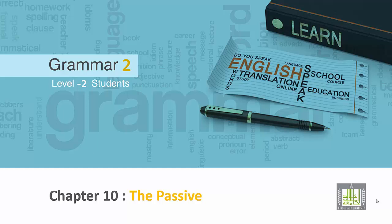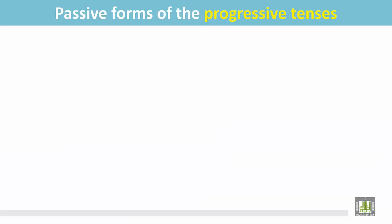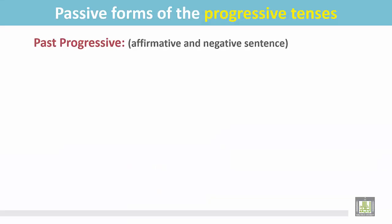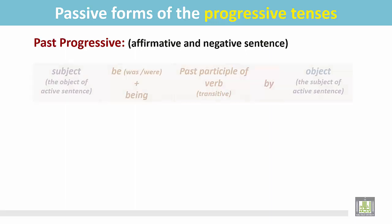Grammar 2 for level 2 students. Chapter 10: The Passive. Passive forms of the progressive tenses — past progressive affirmative and negative sentences.